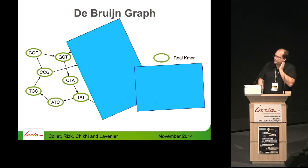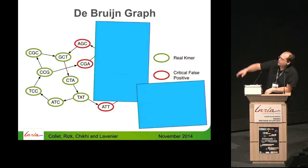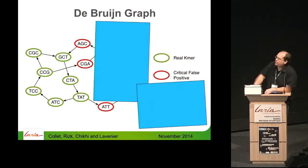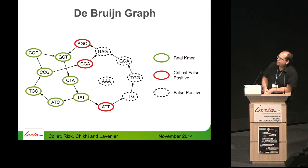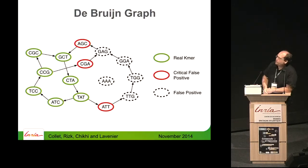False positives are K-mers that are reachable from a valid one. For example, you have TAT in our reference genome and it can be extended with a C, but not with a T. What you want to store is just that it cannot be extended by a T — because if you don't store this, you can go into a false part of the graph. So instead of storing all false positives, they only store the critical ones: those which are the boundaries of the valid ones.